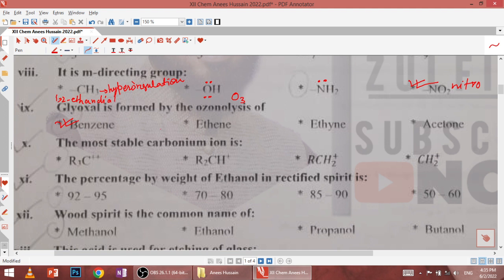Tenth, the most stable carbocation is tertiary carbocation, that is R3C plus. Eleventh, the percentage by weight of ethanol in rectified spirit is 92 to 95 percent. Twelfth, wood spirit is the common name of methanol.